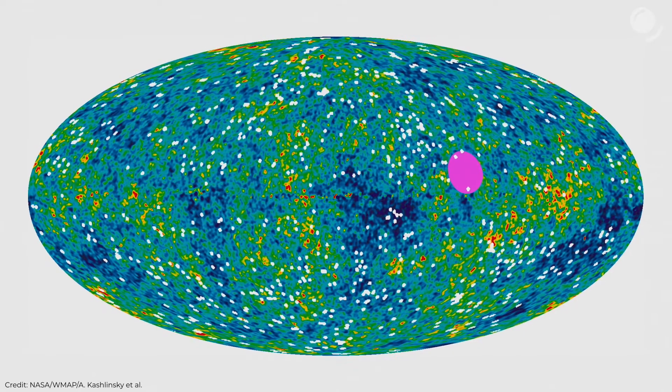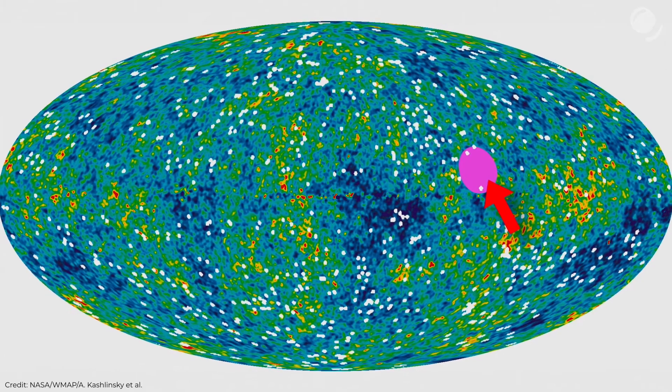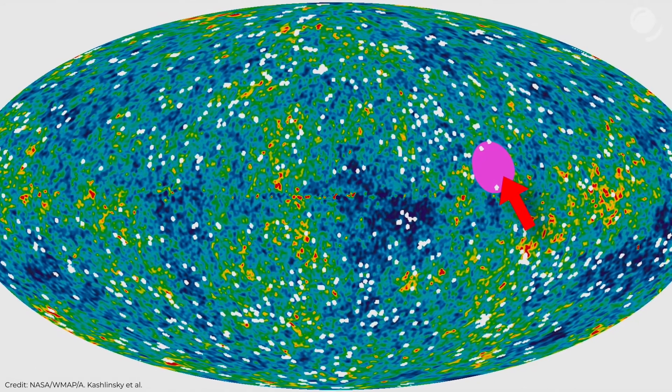So as a result, instead of motions of clusters in random directions, they apparently found a large-scale flow of galaxies towards this portion of the sky between constellations Vela and Centaurus. That was called the Dark Flow. Obviously a lot of scientists met those conclusions with skepticism. As I've said, such motion, if existed, would contradict the cosmological principle.